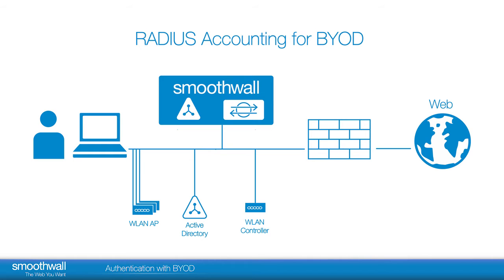RADIUS accounting for BYOD — I want the Smoothwall to be a filter but not a firewall. The user connects to an SSID, or wireless network. The wireless LAN access point connects with the WLAN controller, which goes to Active Directory to verify credentials. It can be accepted or rejected. If it's accepted, a message is passed via the WLAN controller to the access point, granting them access to the network.